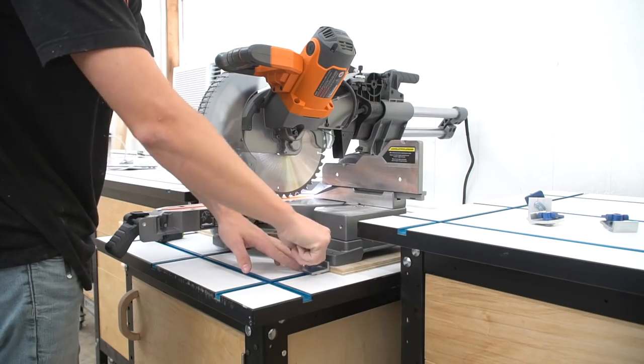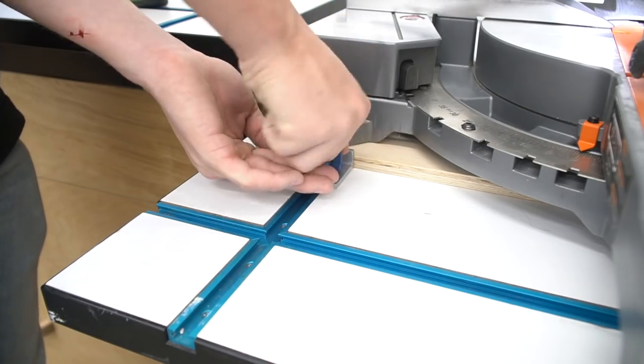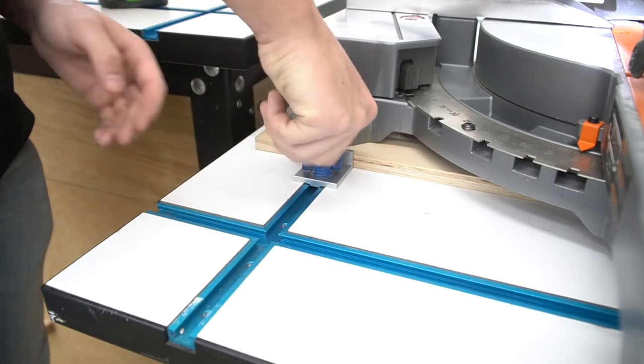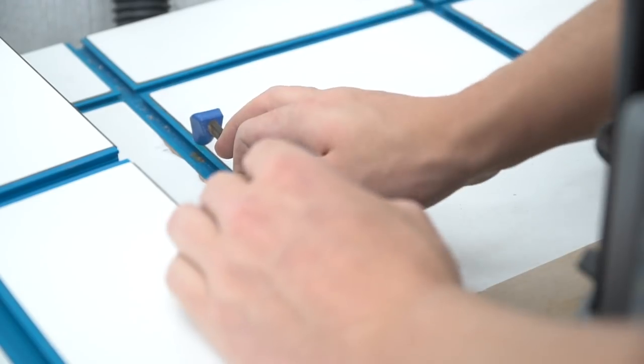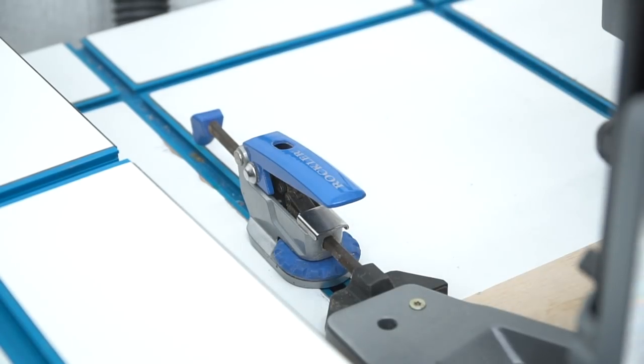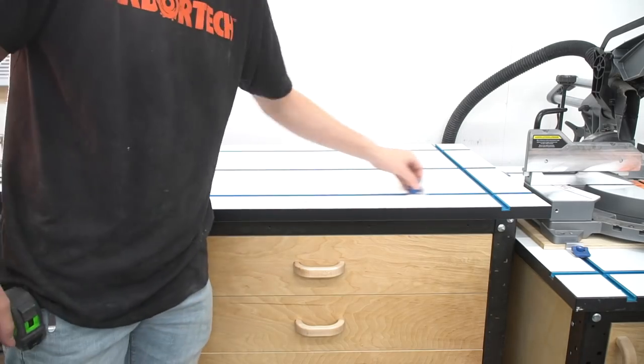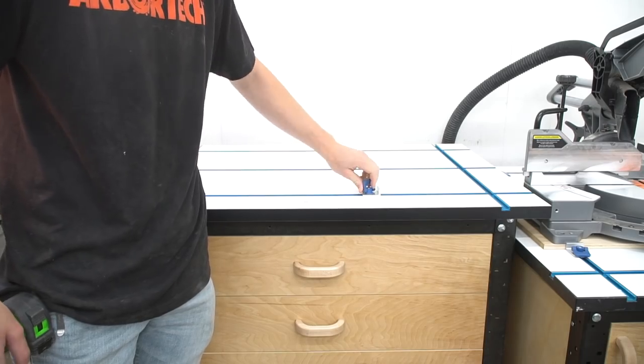We wanted to be able to easily remove the saw, so we decided to use t-track stops in the front and auto-lock t-track clamps in the back to easily be able to secure and release the saw. Because we use t-track tables, the options are endless for accessorizing this stand.